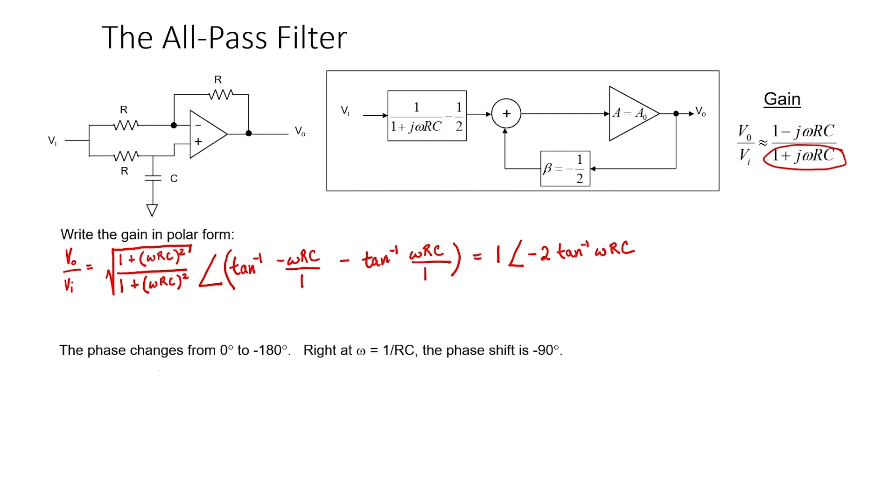Because A times beta is less than 1, the Berkhausen criterion tells us that this circuit is an amplifier, attenuator, or filter. In this particular case, it's a filter.